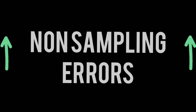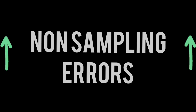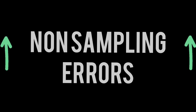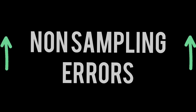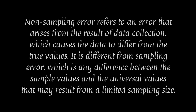What are non-sampling errors? The errors may be either sampling errors or non-sampling errors. Sampling errors are those errors which arise because of choosing the sample from a certain population, and the extent of sampling error can be reduced by increasing the number of samples.